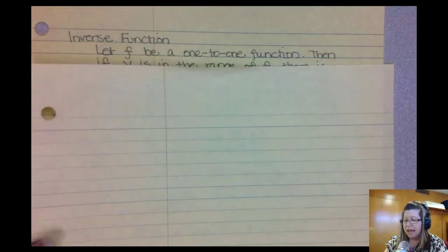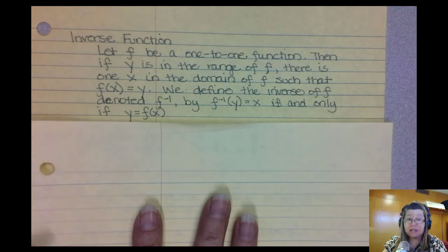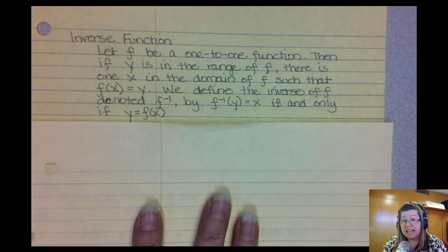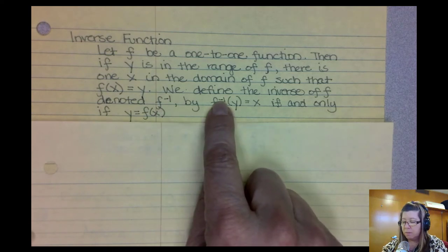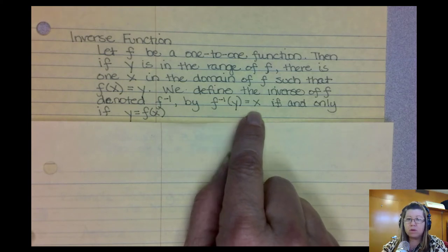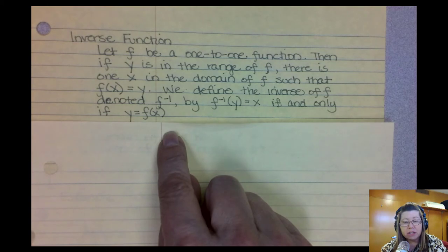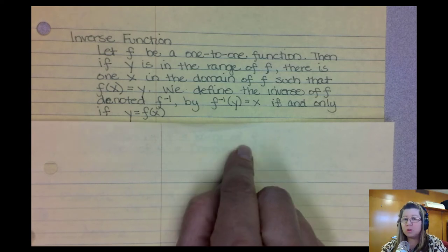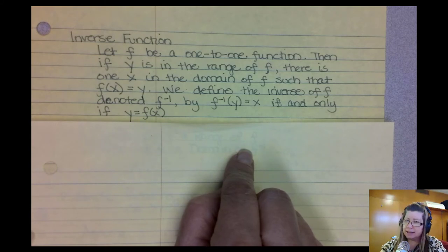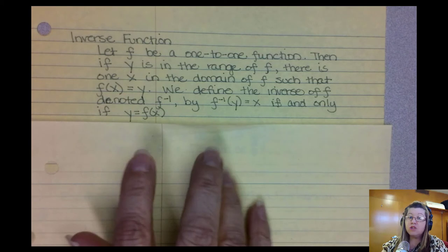If we do indeed have a one-to-one function, then our function has an inverse function. Usually we plug in an x and we get out a y. Our inverse, if we plug in a y, will give us back the x value it came from. We denote it with an f with a power of negative one. An inverse undoes everything a function does. A function does some stuff to a value and the inverse will undo that stuff so we can get back to the original value.